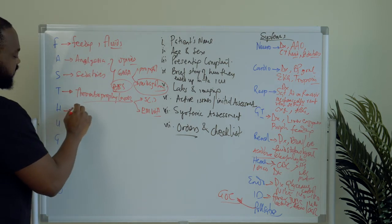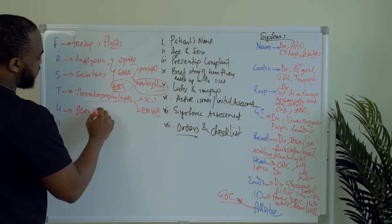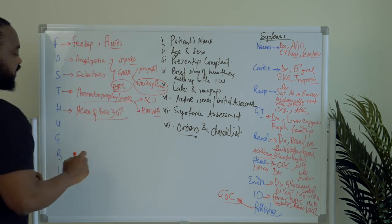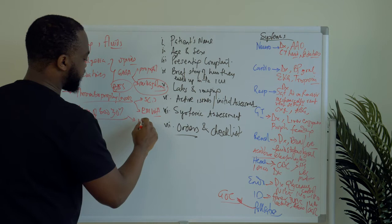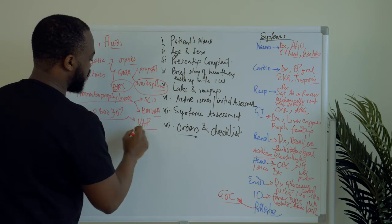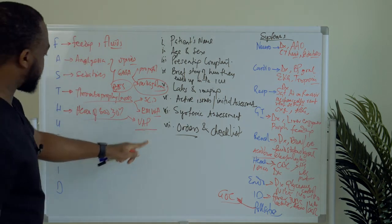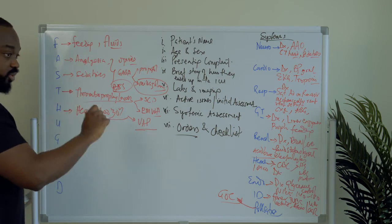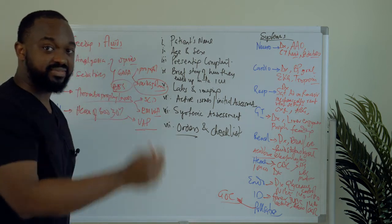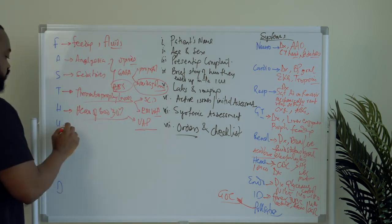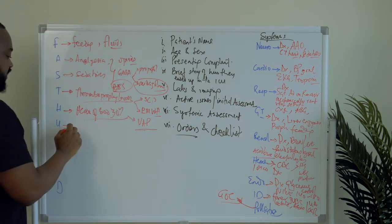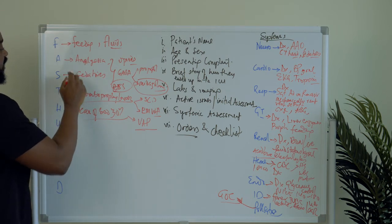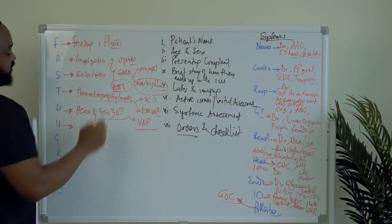The H represents head of bed at 30 degrees, mainly to prevent ventilator-associated pneumonia, which is another hospital-associated problem you want to avoid. It's a metric ICUs and hospitals are judged by.